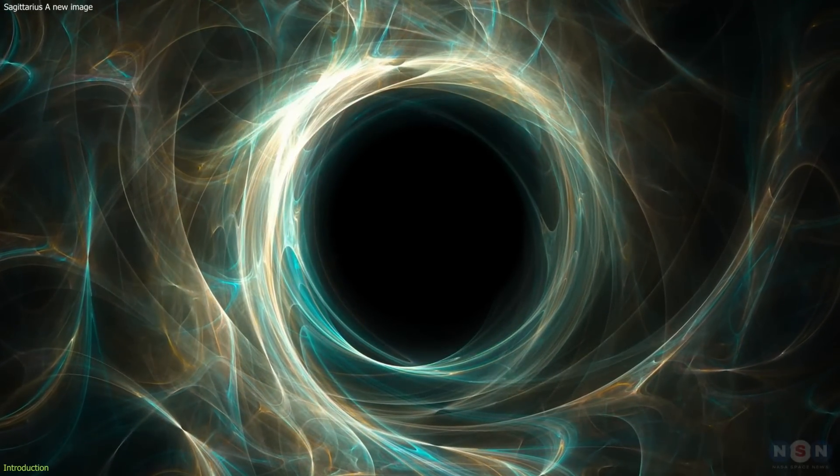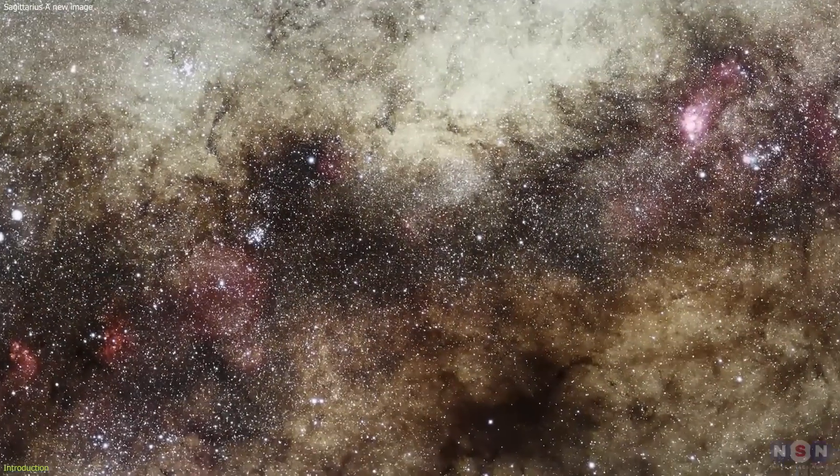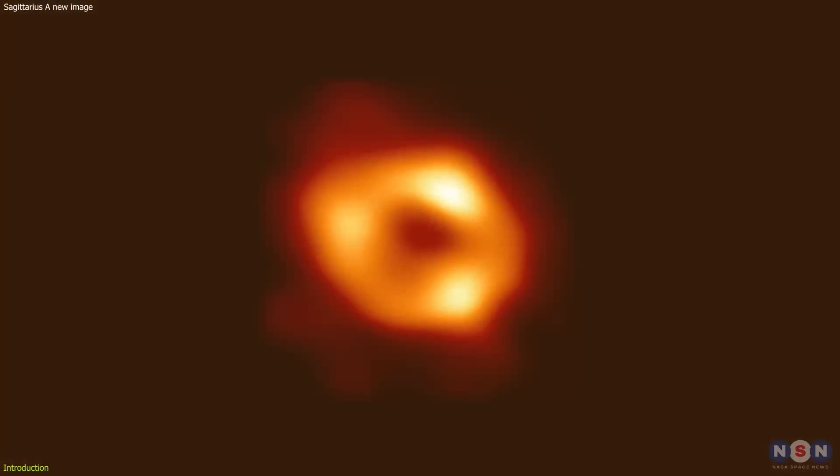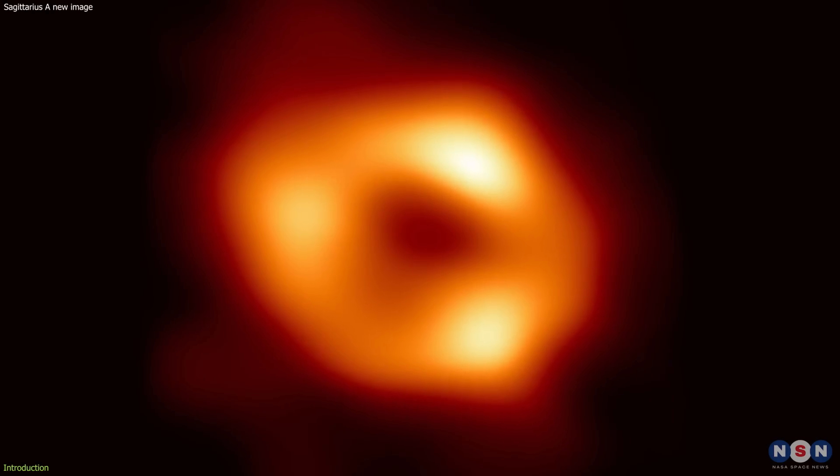The magnetic fields that enshroud the supermassive black hole at the center of our galaxy, Sagittarius A star, have been unveiled through the lens of twisted light.